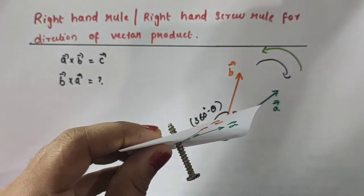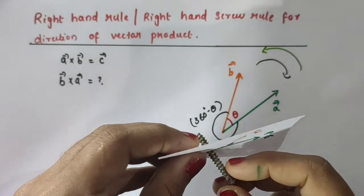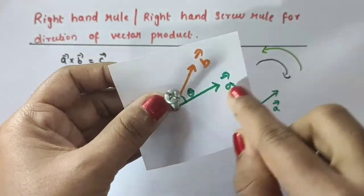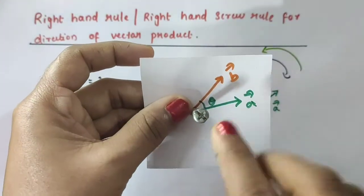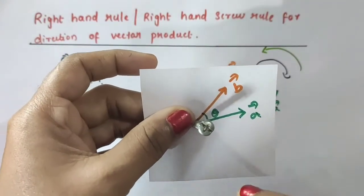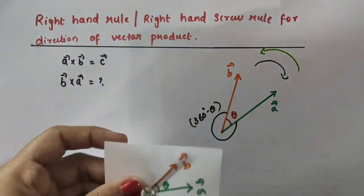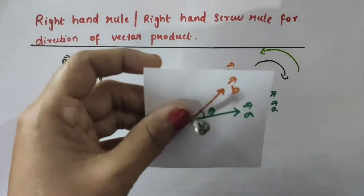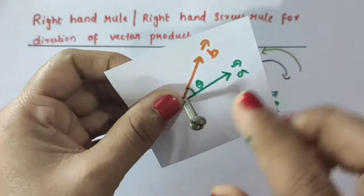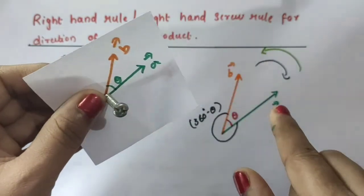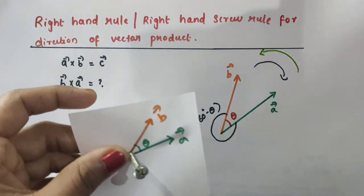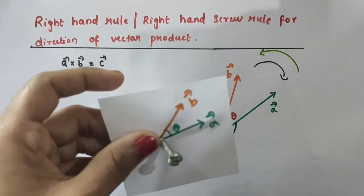Now let us see the right hand screw rule for defining the direction of the vector product A cross B. Here we have a screw and two vectors, vector A and vector B, in the plane of the paper. To get the direction of vector C, we turn the head of the screw from vector A to vector B — that is, in the anti-clockwise direction. The tip of the screw then advances in the direction of vector C.